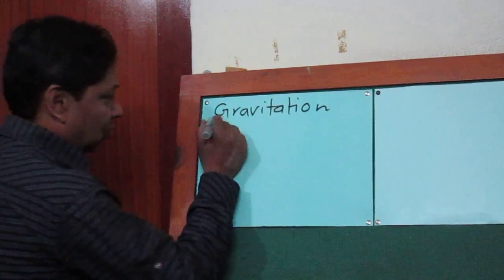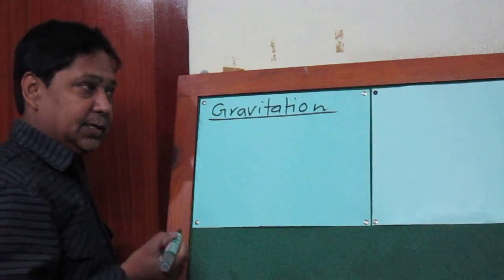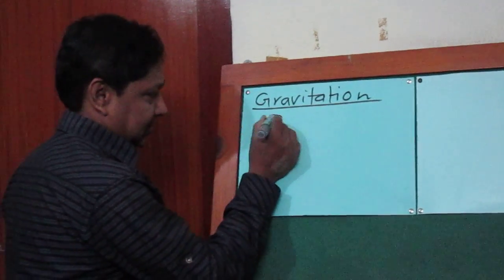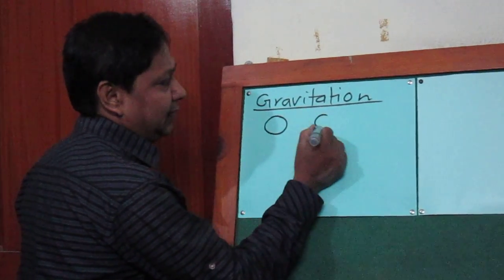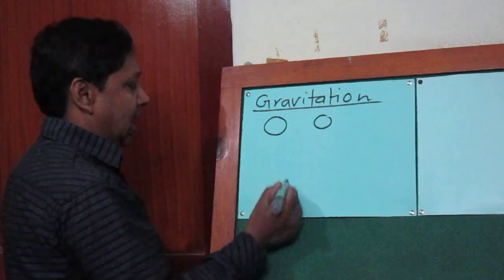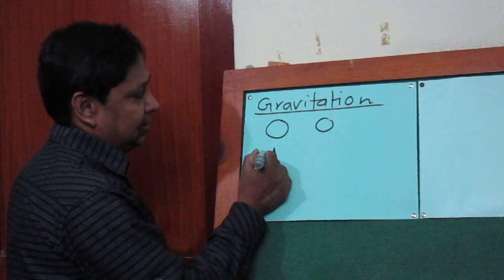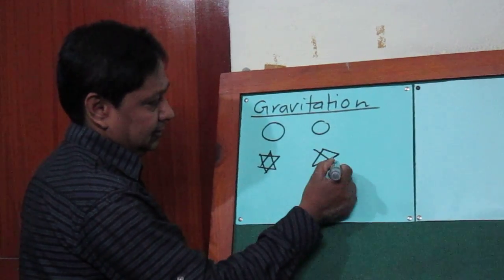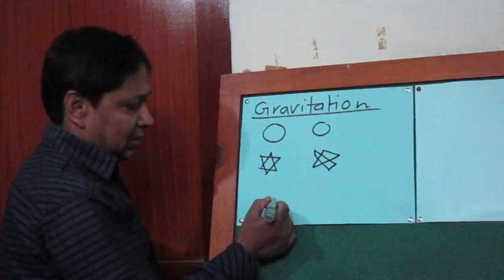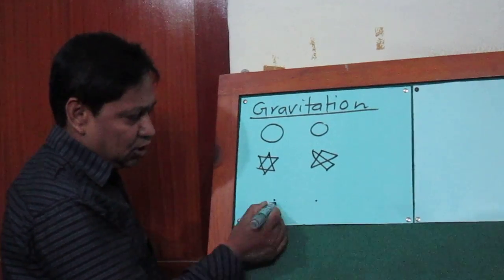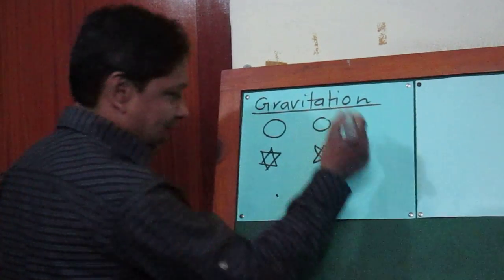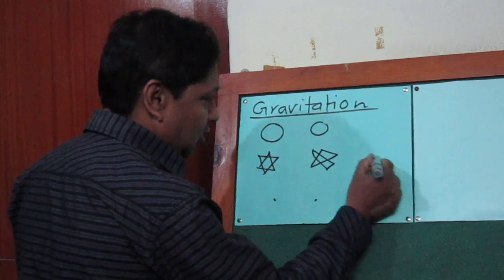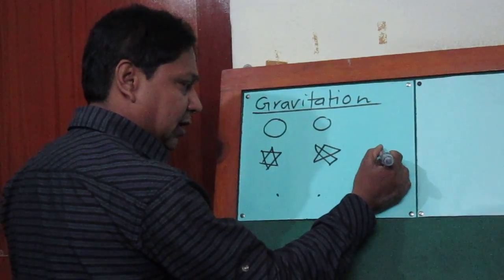Gravitation - we are talking about gravitation. Let's say these are two heavenly bodies, two stars. Let's say these are two dust particles, and let's say this is earth and this is a body lying on its surface.